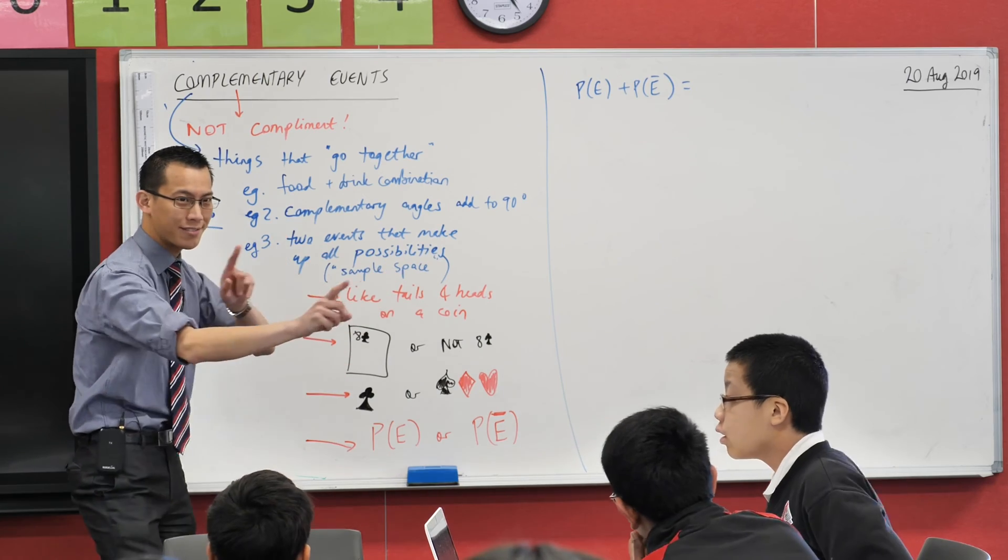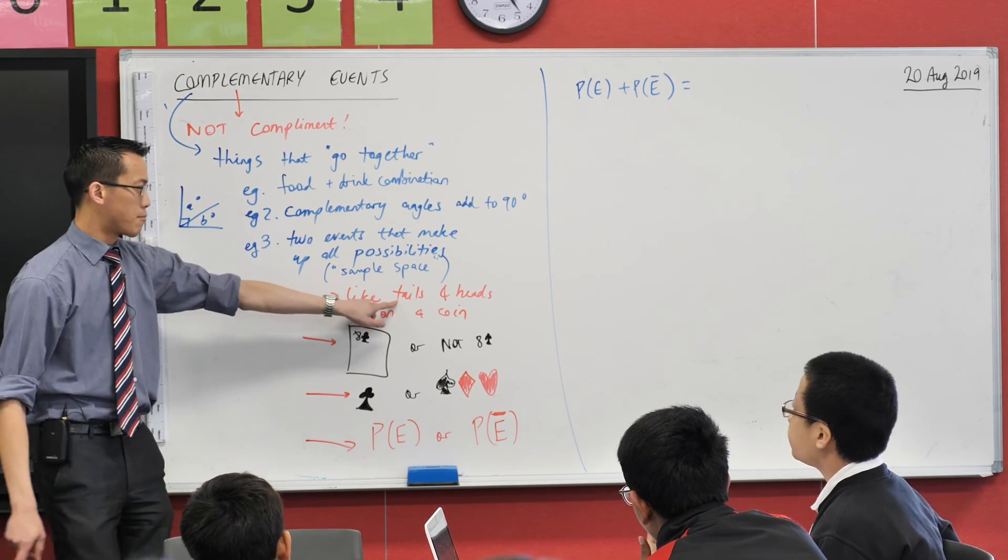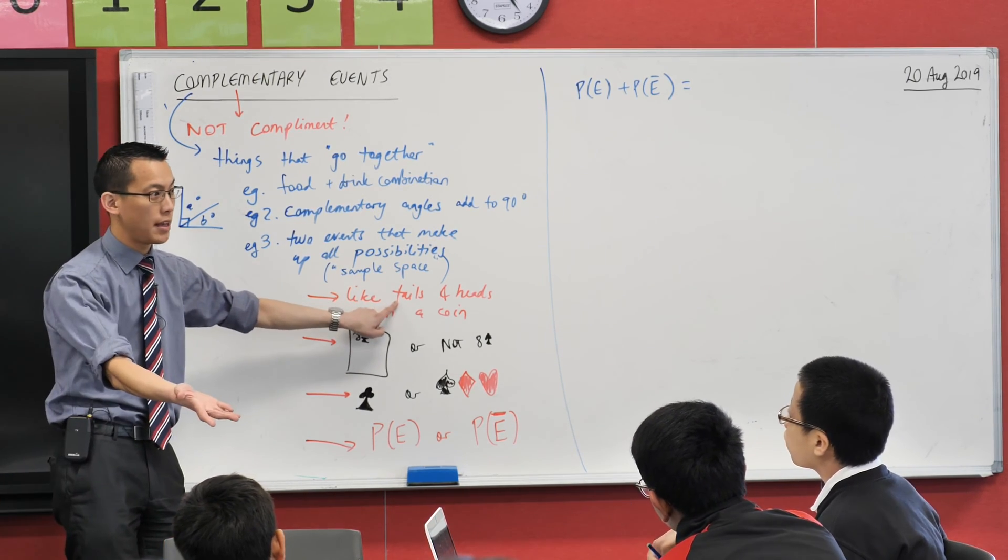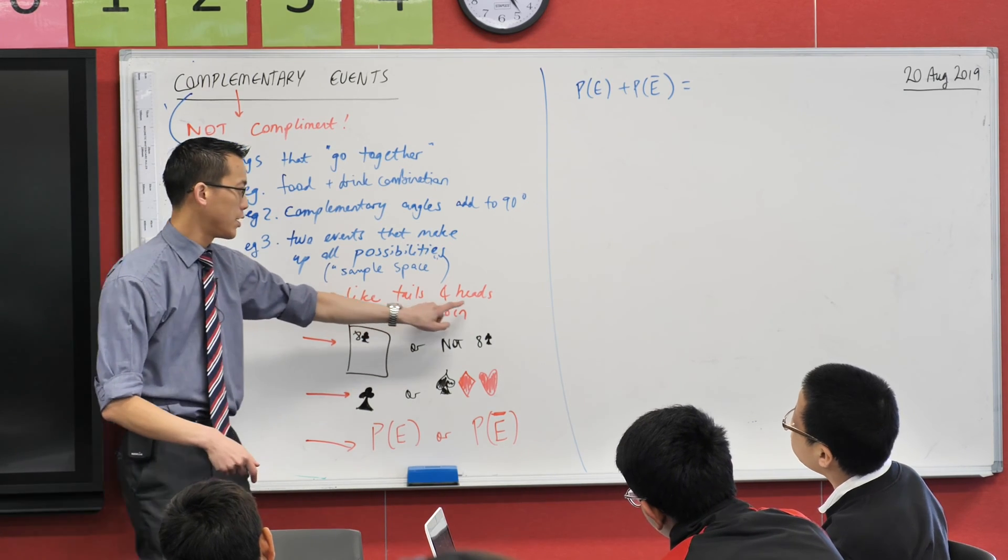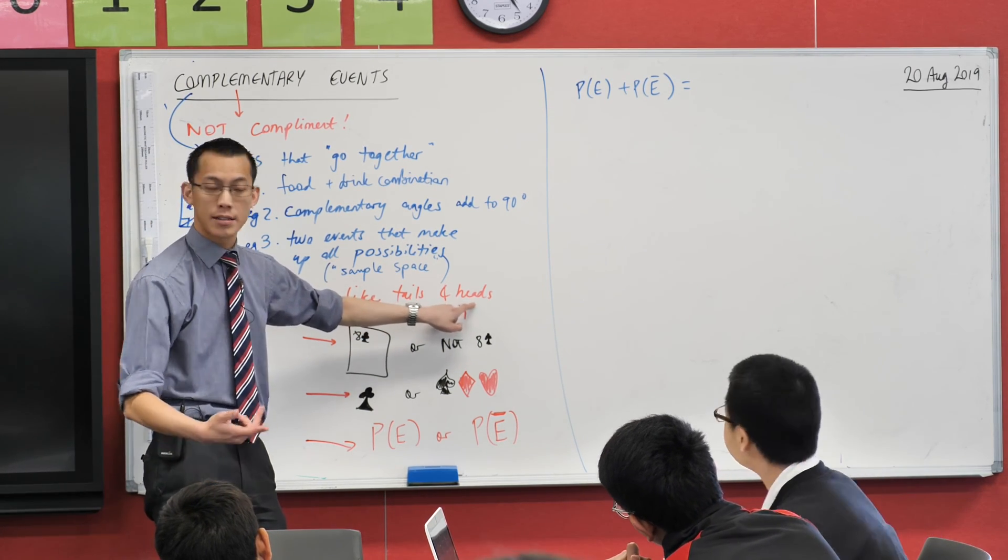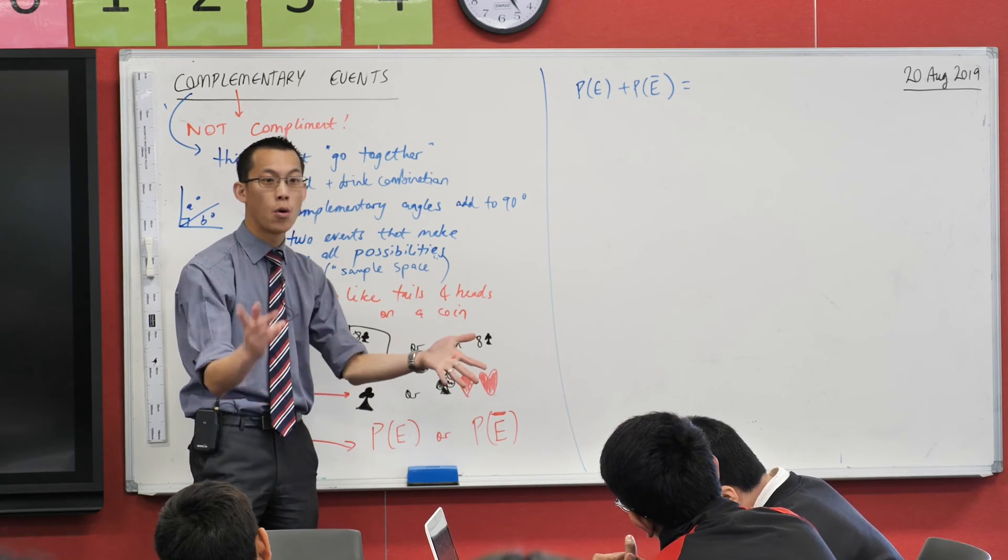Hold that thought, okay? Let's have a look. Probability of tails on a fair coin is a half, right? Probability of heads on the same coin? It's a half, so half plus half equals one, very good.